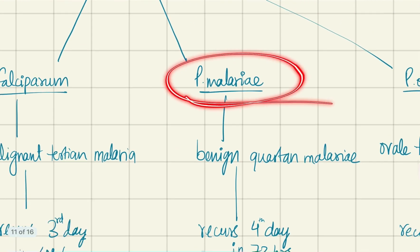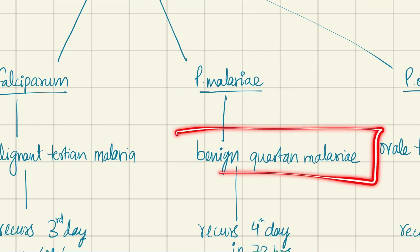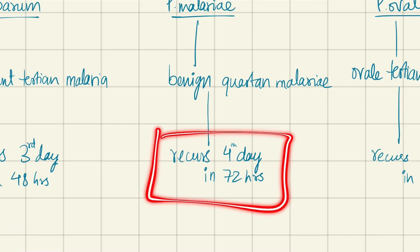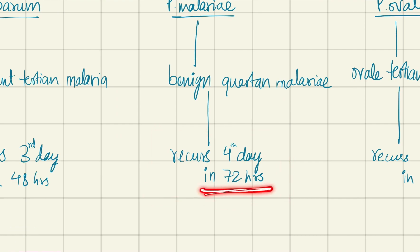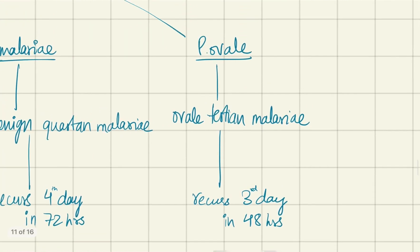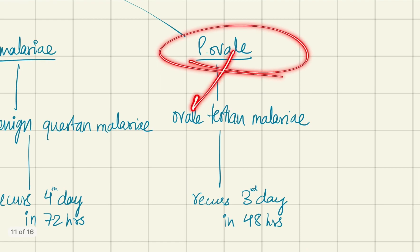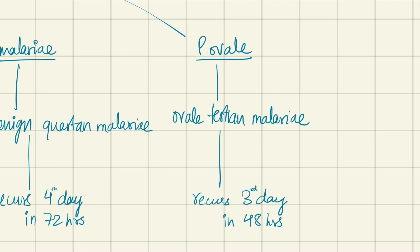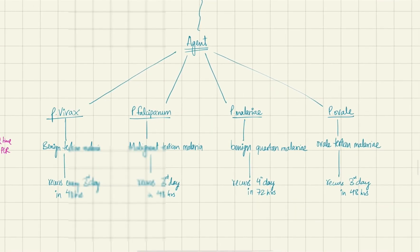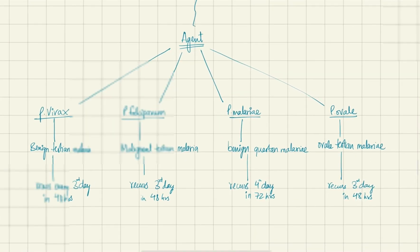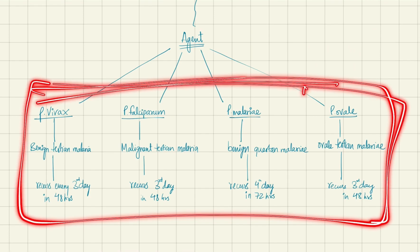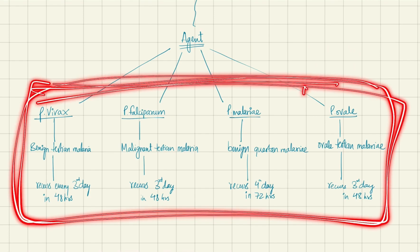Then we have Plasmodium malariae, also known as benign quartan malaria, where the fever recurs every fourth day in 72 hours. Finally, Plasmodium ovale is ovale tertian malaria where the fever recurs every third day. These are the four main classifications — very important and you must have seen them in your NEET exam as well.